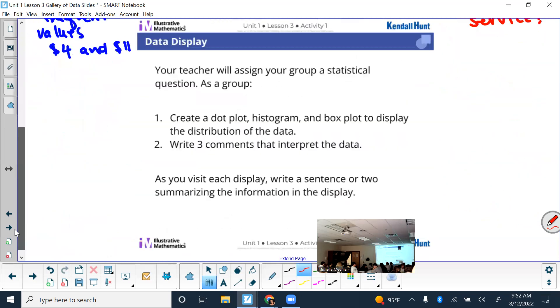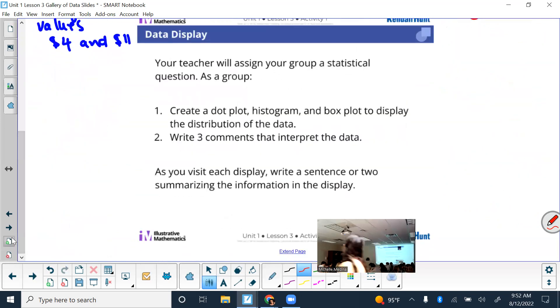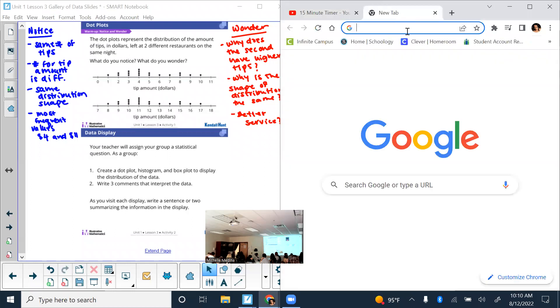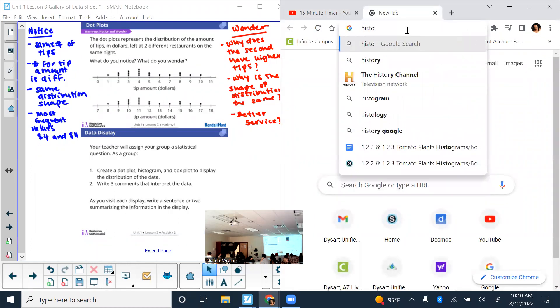So of the things that you notice and wonder, that just kind of helps us for what we're about to do next. What you are doing today is creating a dot plot, histogram, and box plot to display the distribution of the data. And then you will write three comments that interpret that data. So on your note page, you all have sections to put your drawings. But you're going to be working together to make sure that they are accurate. I'm going to distribute some data.